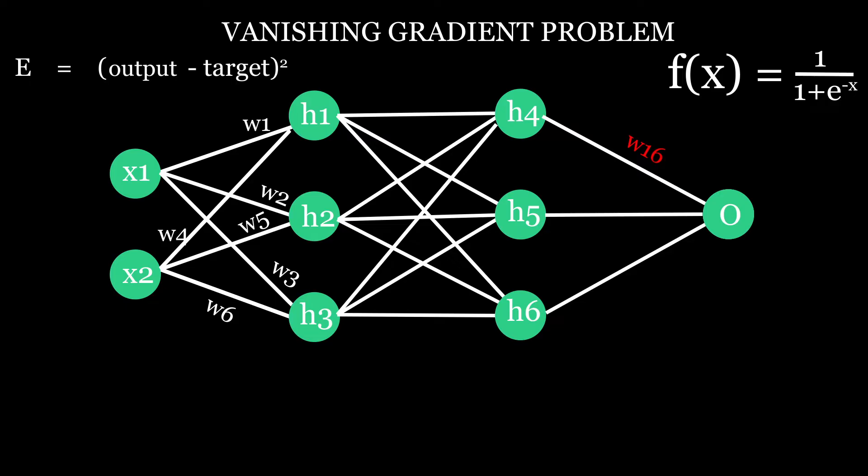So to update this weight, first we have to calculate the gradient. A gradient measures the rate at which loss changes with respect to weight. If we take the derivative of loss with respect to weight, we will have our gradient for this weight.